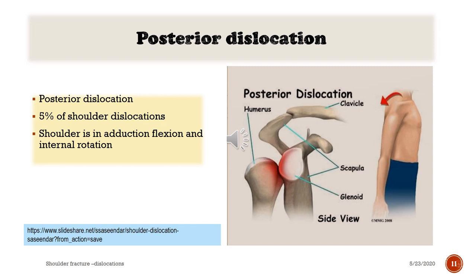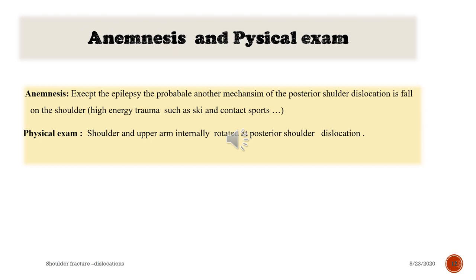Posterior dislocation accounts for approximately 5% of shoulder dislocations. The shoulder is in an adducted, flexed, and internally rotated position. Notice the typical appearance of posterior dislocation of the shoulder.